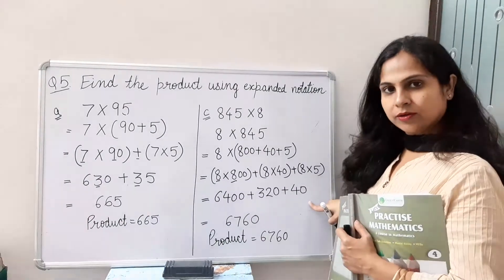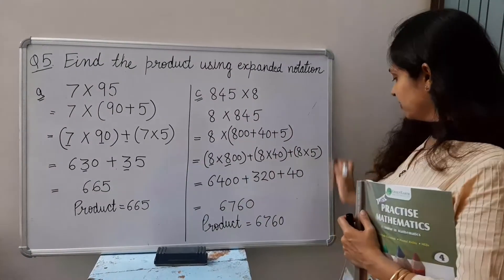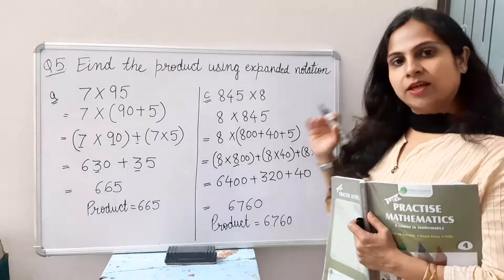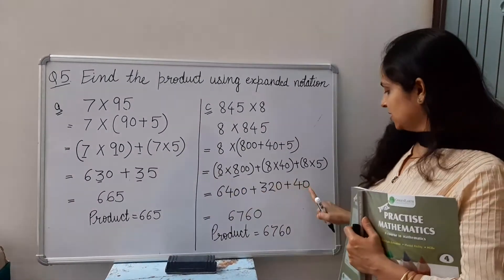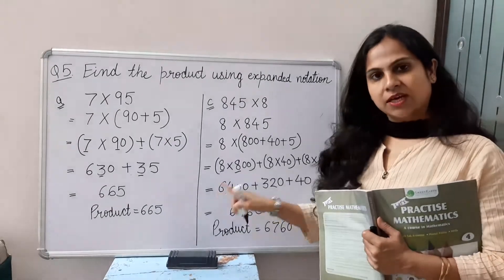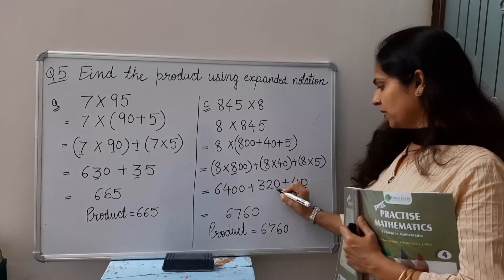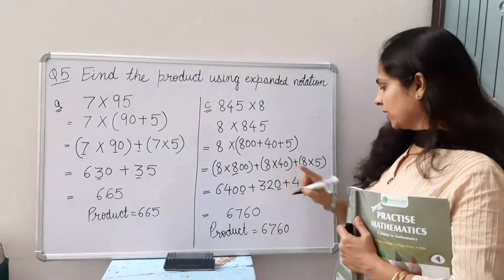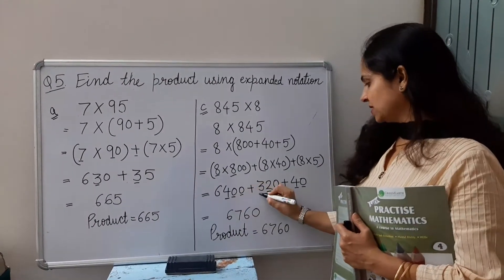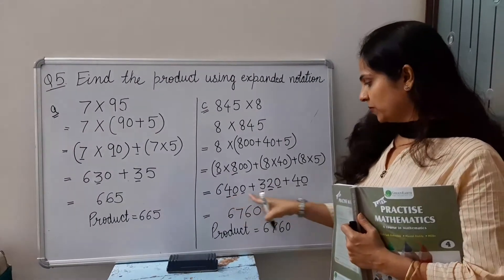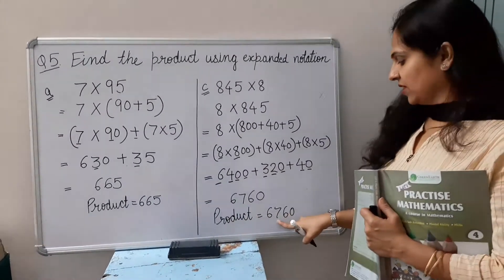We can add horizontally or vertically. If you are not able to add horizontally, make a rough column on the right side of your register. Add according to places: ones place 0 plus 0 plus 0 is 0; tens place 4 plus 2 plus 0 is 6; hundreds place 4 plus 3 is 7; thousands place is 6. So our product is 6760.